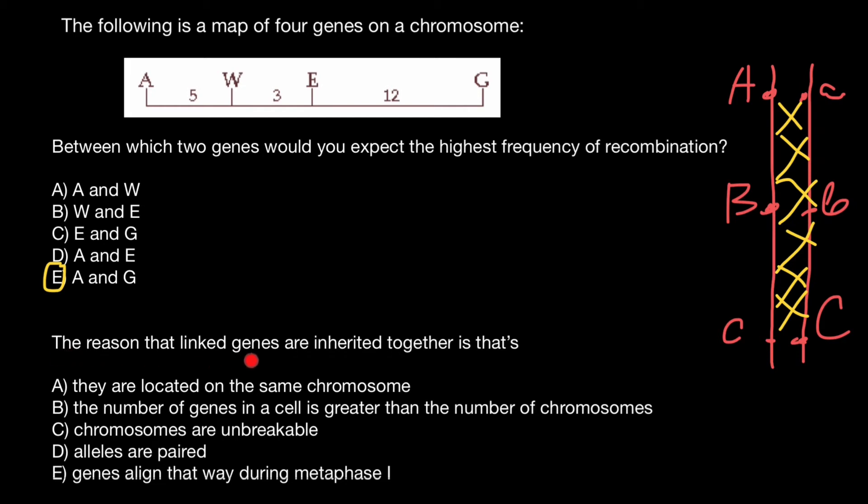The reason that linked genes are inherited together is, take a look. Linked genes means that genes are on the same chromosome. Sometimes crossing over may happen between two homologous chromosomes. But still, genes which are on the same chromosome would have a tendency to be inherited together. And the closer the genes to each other, the higher this tendency would be.